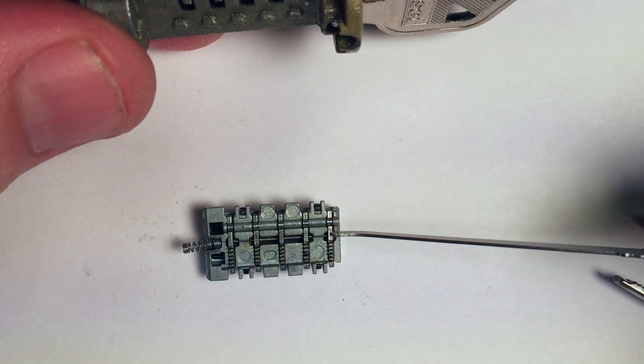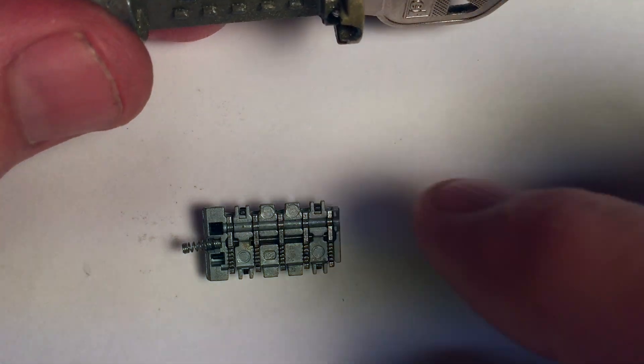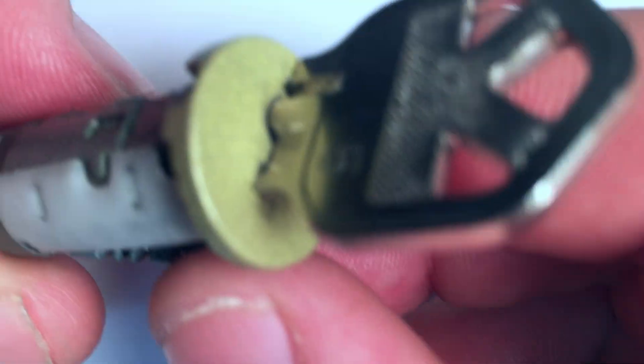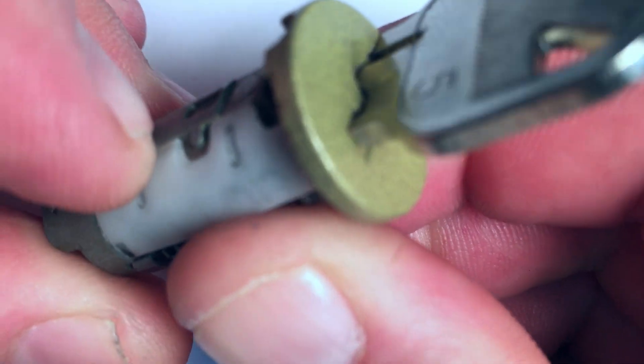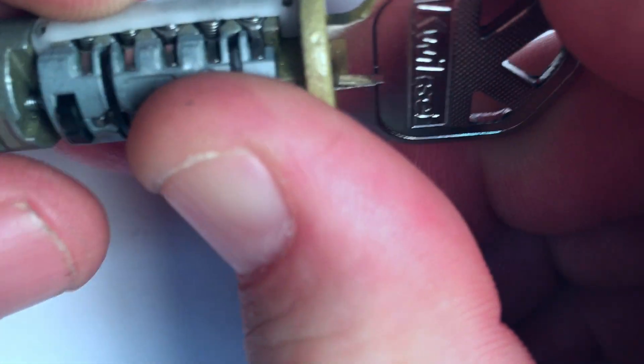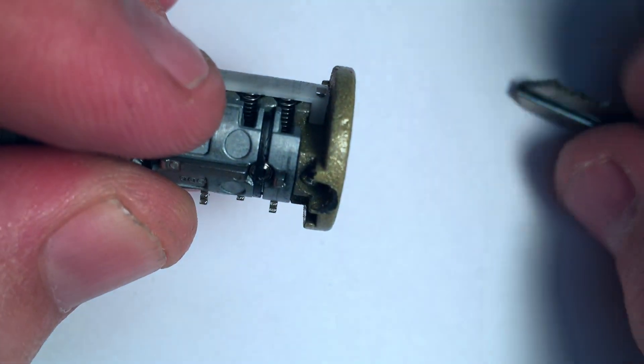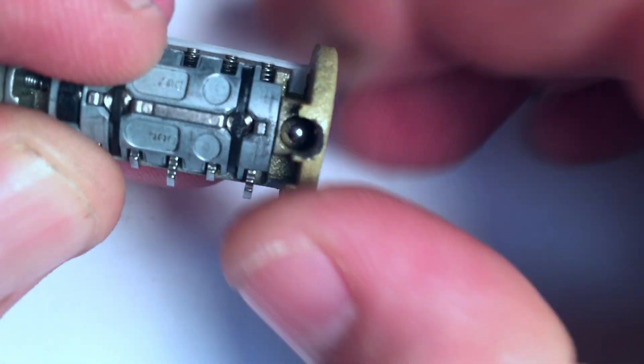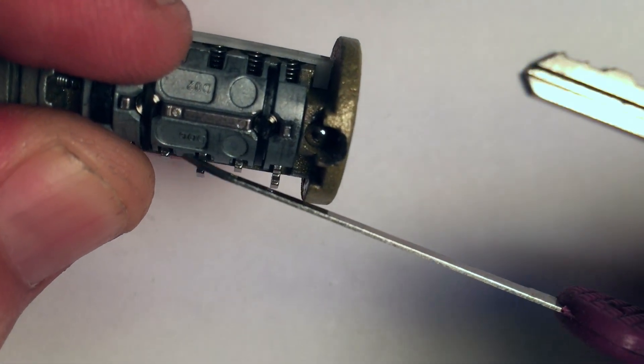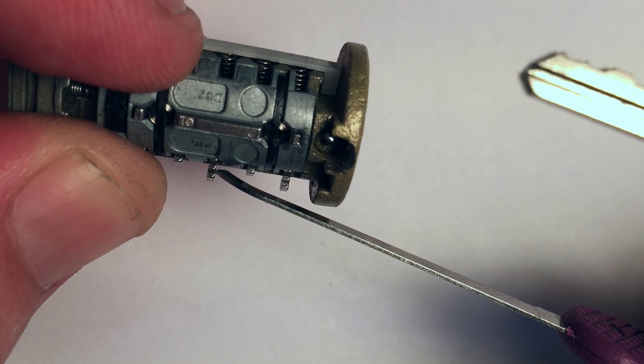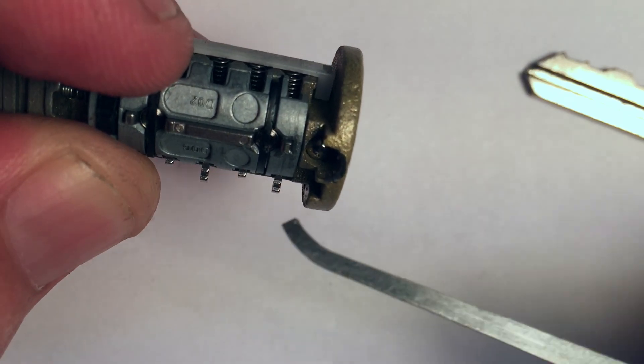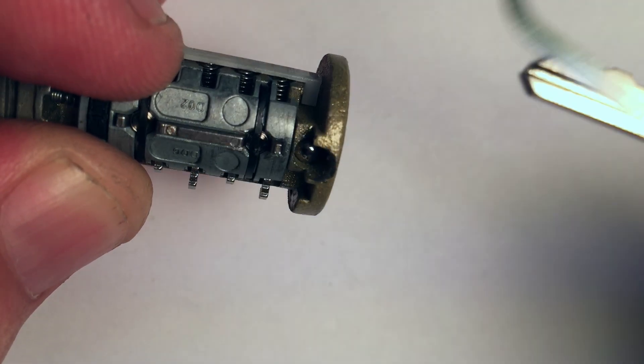For anybody curious about rekeying a Kwikset SmartKey without buying the keying annex, you just line these gates up, make sure when you put it in you push it all the way back, let it go, and then slide in your key. Your lock is now keyed. You can see as I pull that out, these wafers protrude out at varying degrees depending on which sawtooth the little shelf rested into.